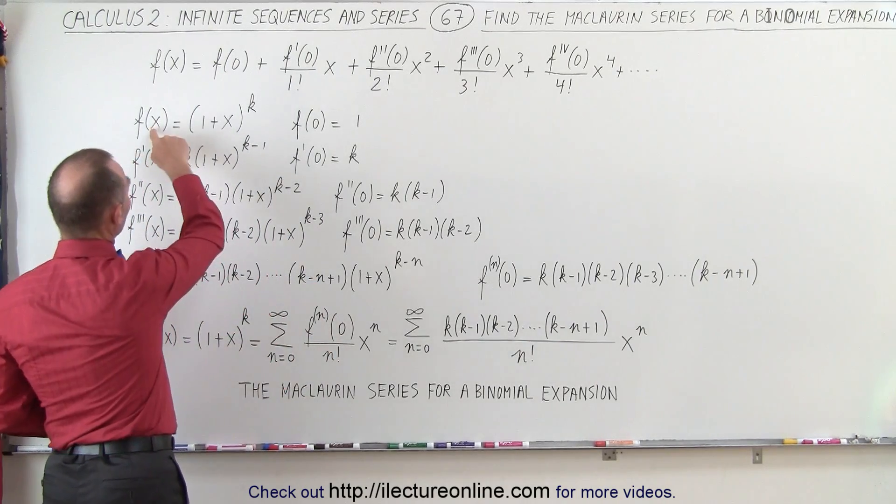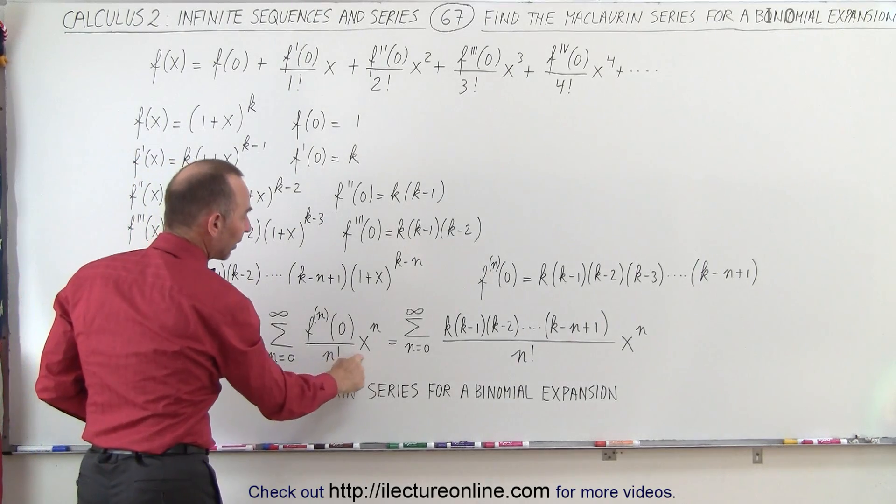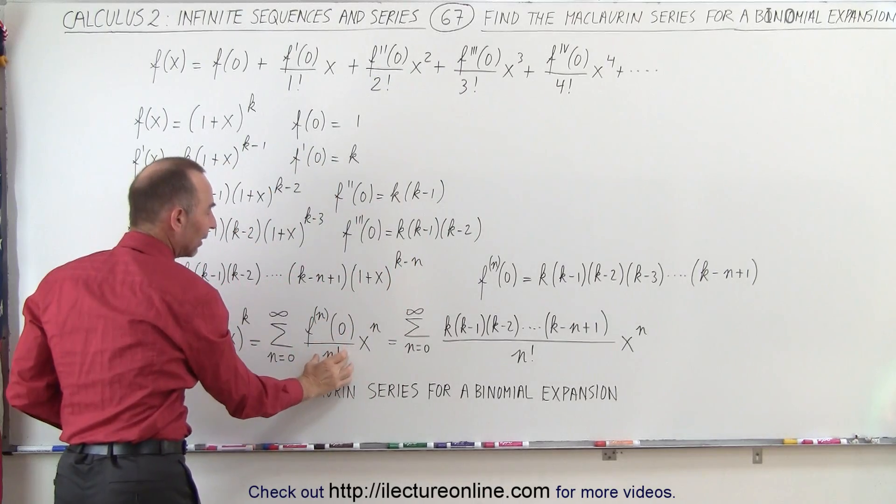So the 0 root, the first root, the second root, the third root, times x to the n power. You can see that x to the first, x to the second, x to the third, divided by n factorial. 1 factorial, 2 factorial, 3 factorial.